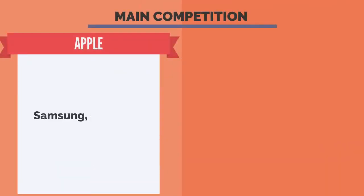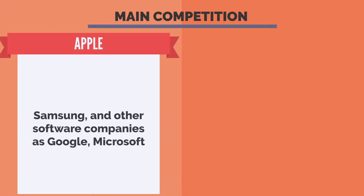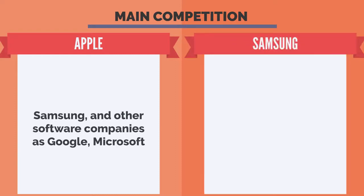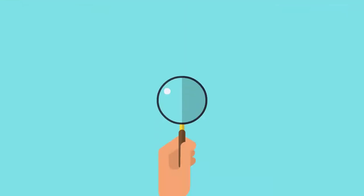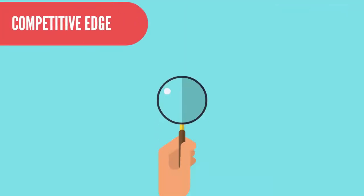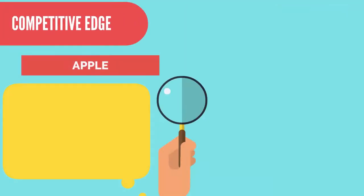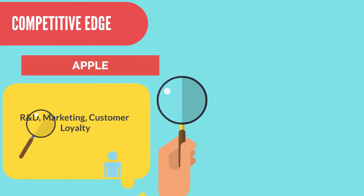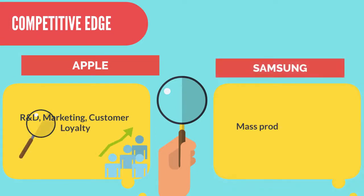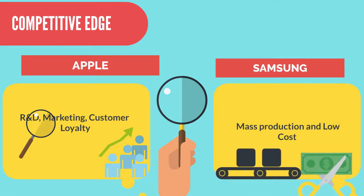Apple's quality is described as premium; Samsung's as excellent. The main competition for Apple is Samsung and other software companies such as Google and Microsoft. Samsung's main competition comes from low-cost providers like Huawei and Oppo.